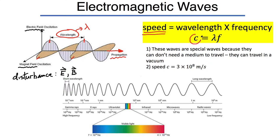The speed of the wave is written using the letter C — common for electromagnetic waves. The value of C through empty space or air is 3 × 10⁸ meters per second — a really fast propagation. These waves are special because they don't require a medium to travel. Sound waves needed air or some solid or liquid medium, but electromagnetic waves can travel in a vacuum, which is really what makes them special.